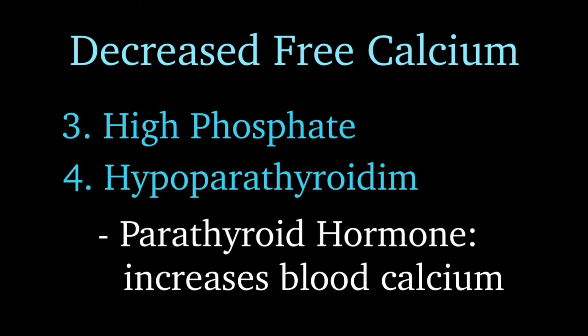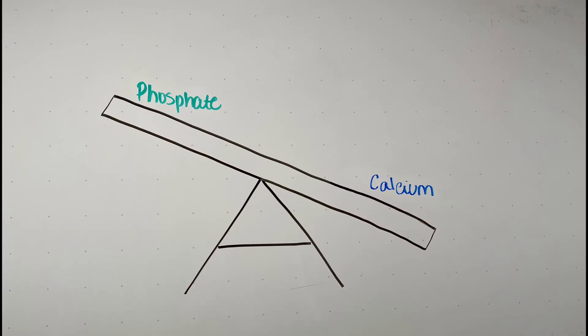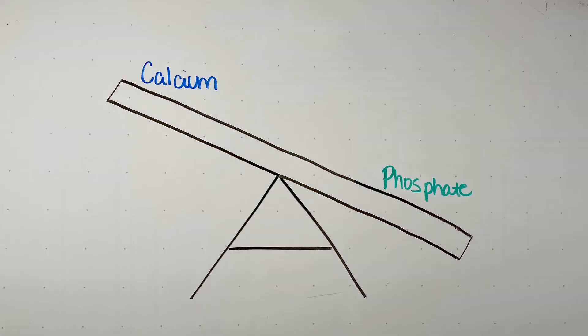High phosphate can also cause hypocalcemia. Phosphate and calcium are opposites — when phosphate is high, calcium is low, and vice versa. To remember this, think of them as two kids on a teeter-totter: when one is up, the other is down.